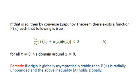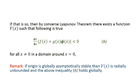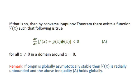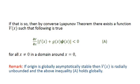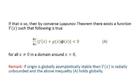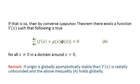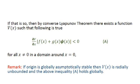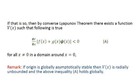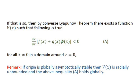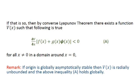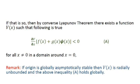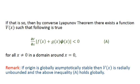If the origin is asymptotically stable, then by the converse Lyapunov theorem there exists a function V(x) such that its derivative satisfies the inequality shown — it is negative definite for all x not equal to zero in a domain around x equals zero. If the origin is globally asymptotically stable, then V(x) would be radially unbounded and the equation holds globally; otherwise it holds locally.